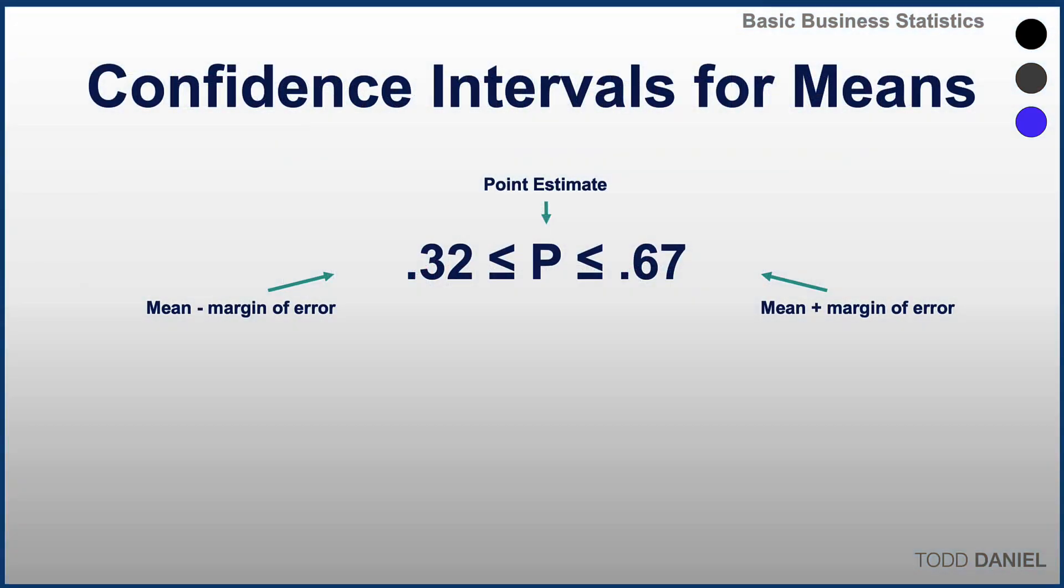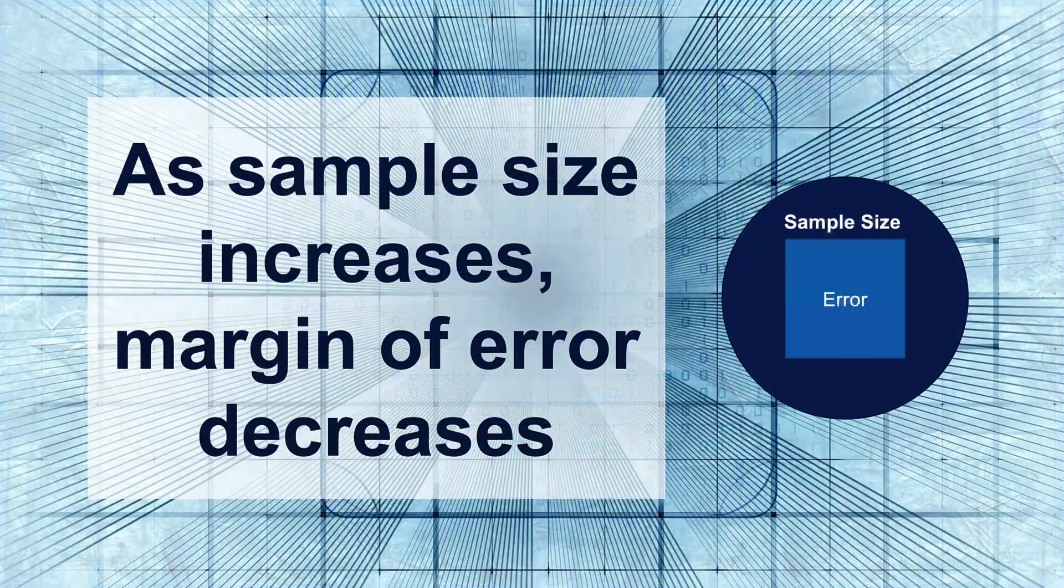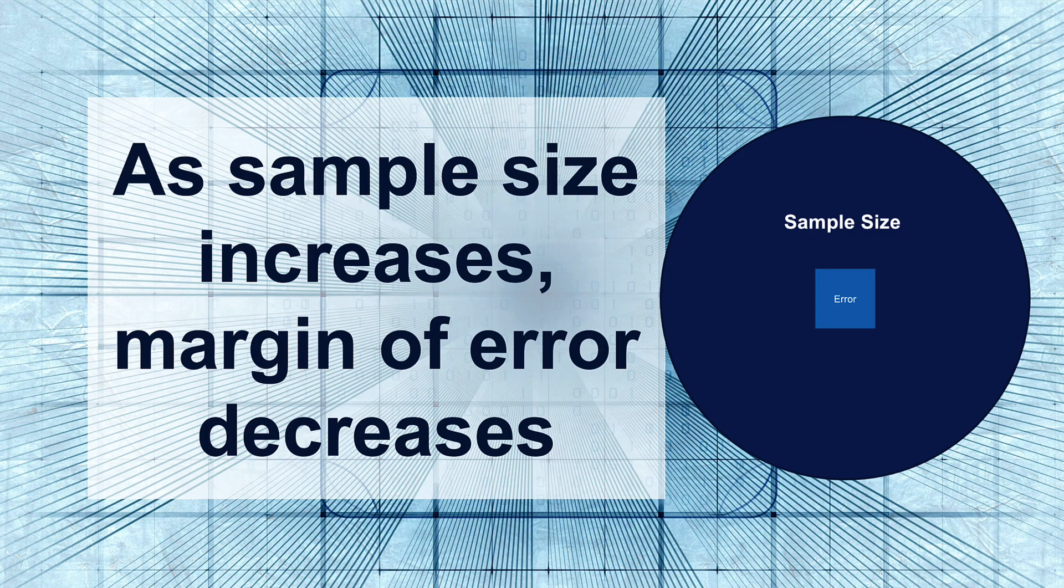The width of a confidence interval can be changed by increasing or decreasing your level of confidence, and as sample size increases, your margin of error will decrease. Therefore, larger sample sizes give us better estimators.